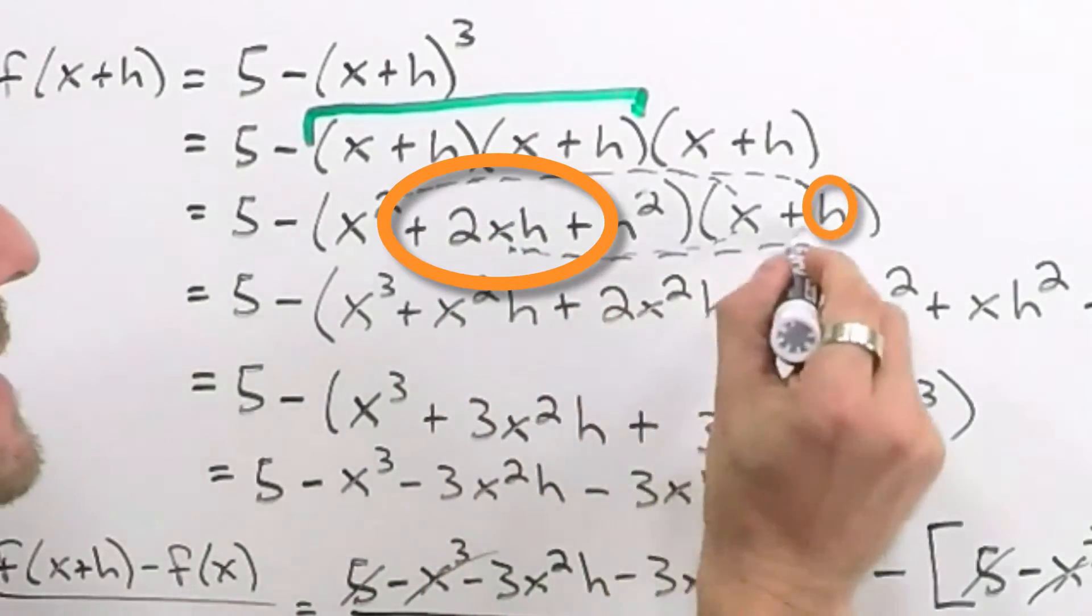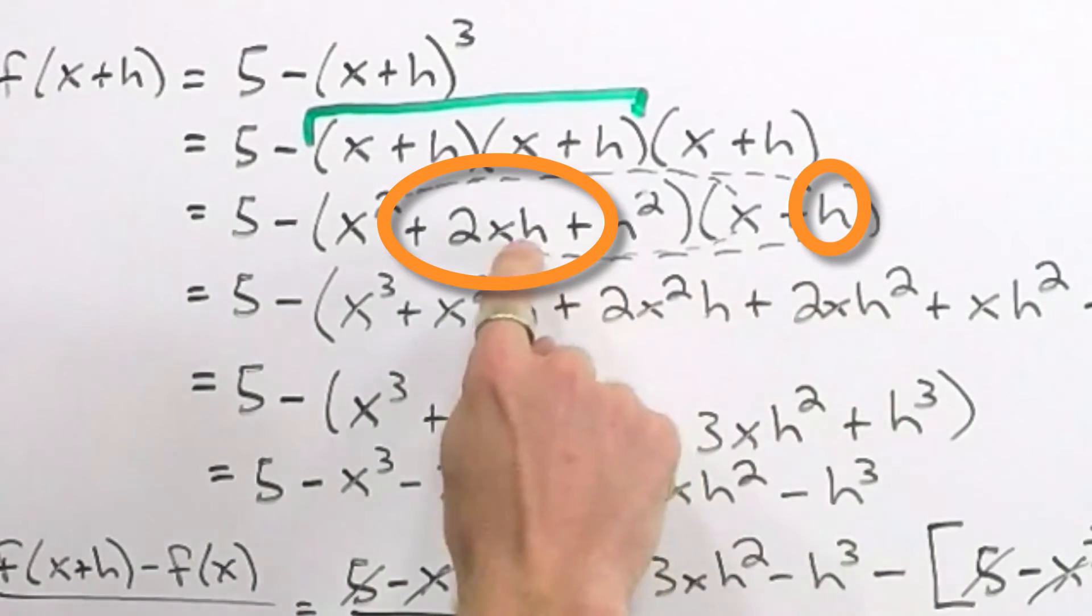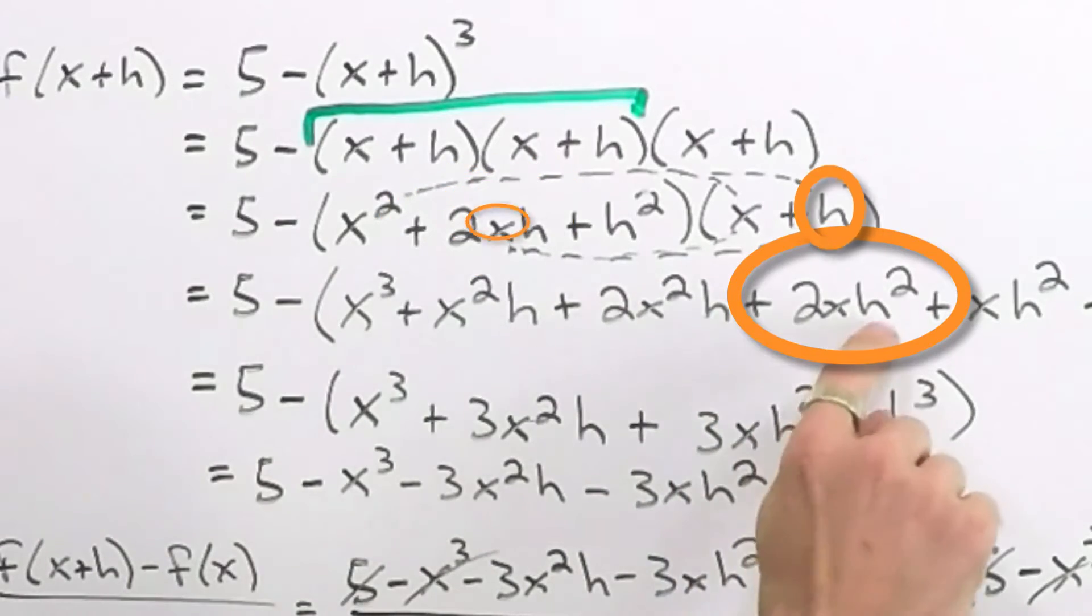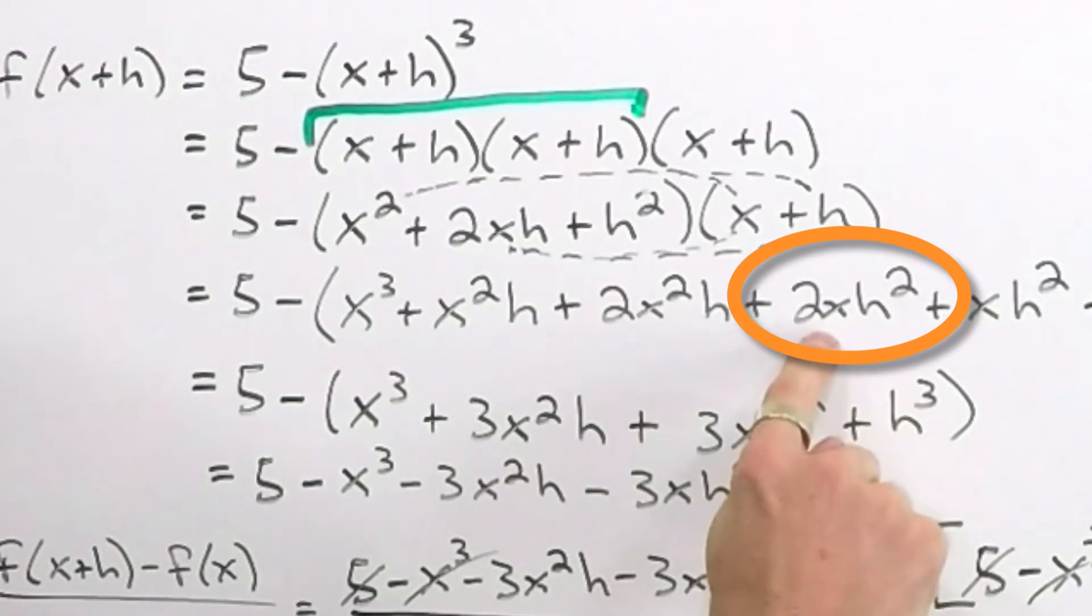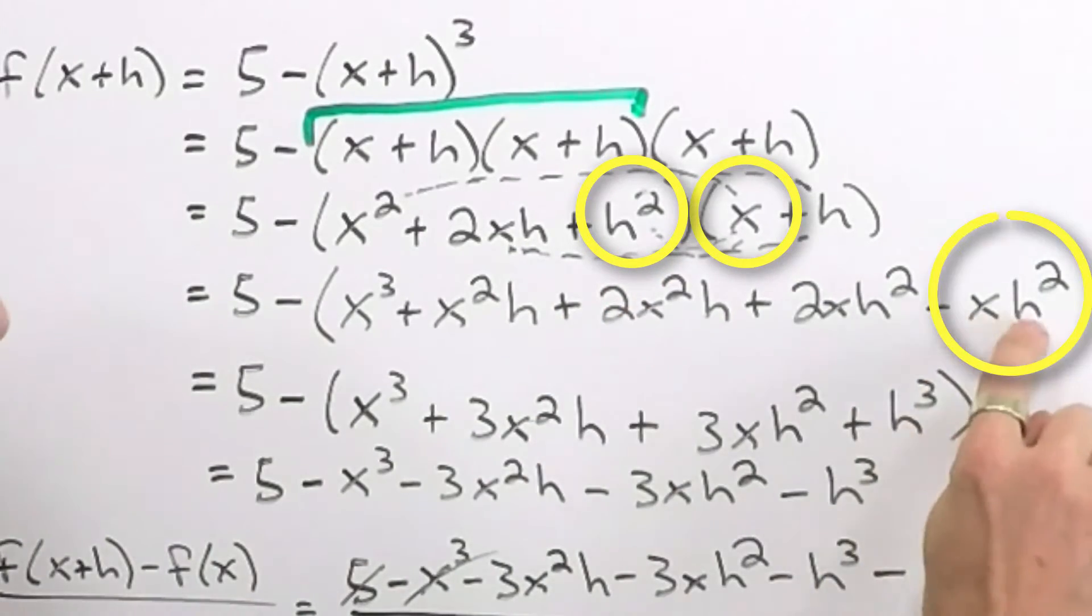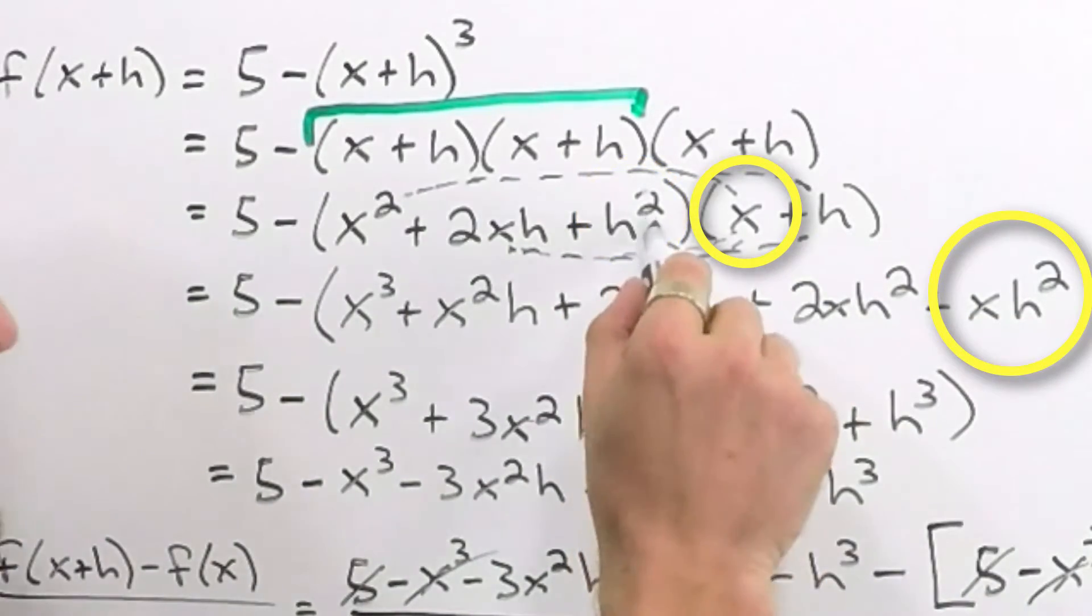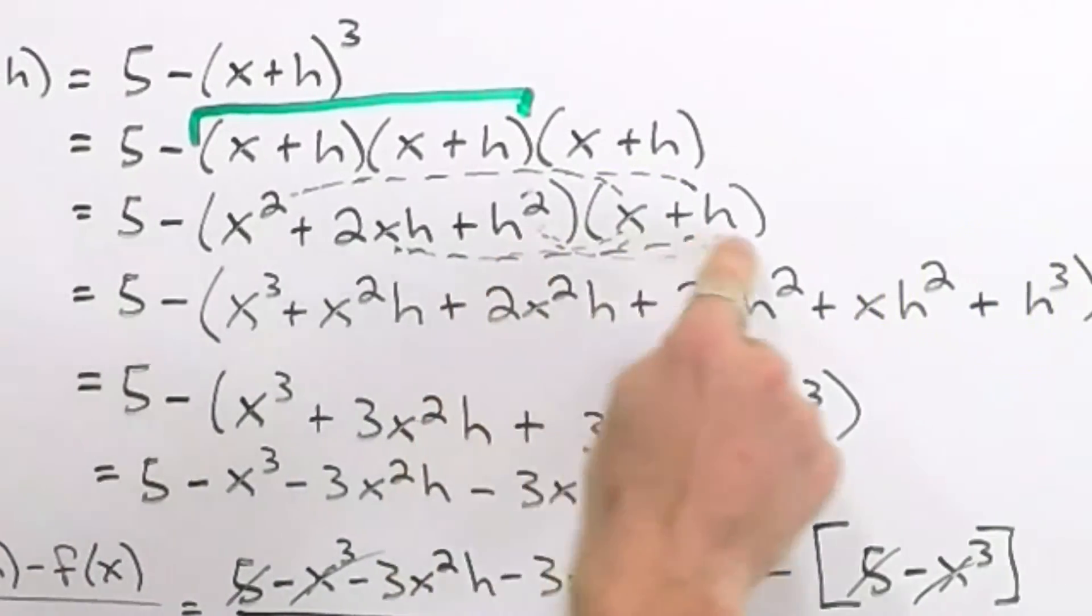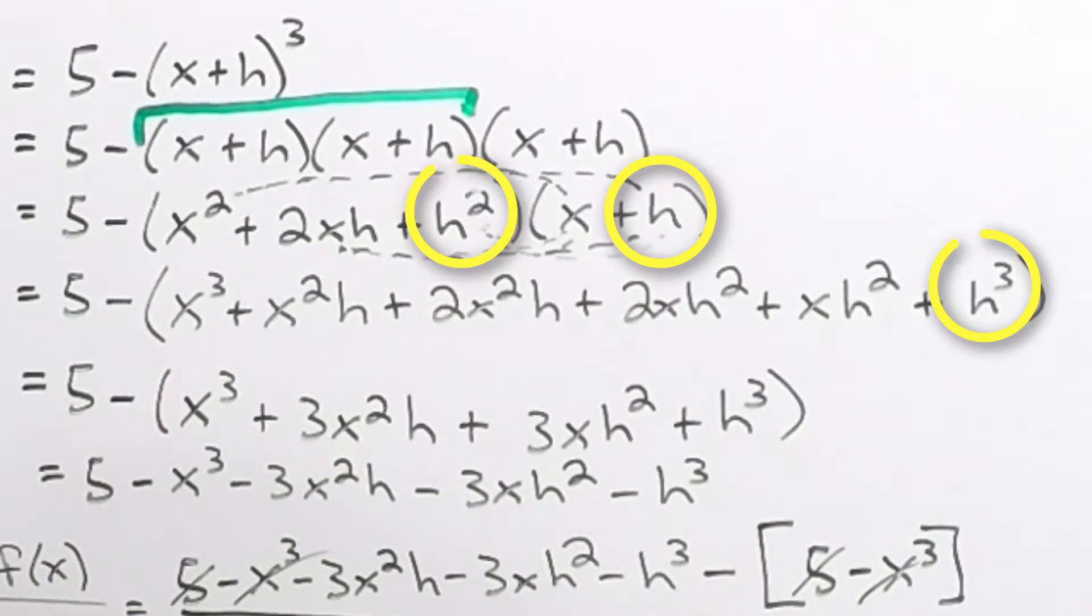Then we come back, let it hit this last guy. Of course, h and h will give us the h squared term and the two x's in front. And then the last part here, we let this h squared hit the x, which will give us x h squared. And finally, we get down to the h squared times the h, which gives us h cubed at the end.